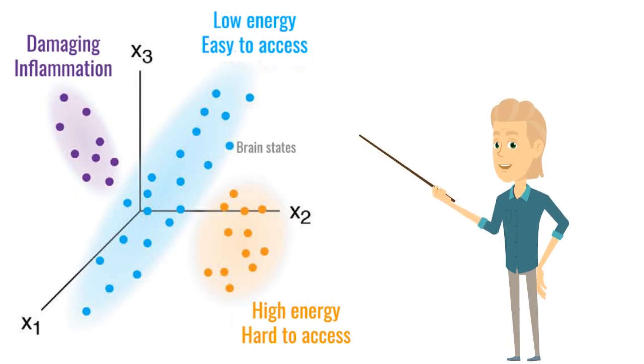We have easy to access low energy demanding states shown in blue, difficult to access high energy demanding states shown in orange, and damaging states such as burnout, anxiety and depression or addiction shown in purple.